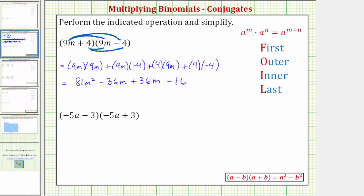Notice how we do have two like terms here. Negative 36m plus 36m is zero. So when multiplying conjugates, these two middle terms should always be opposites and have a sum of zero. And therefore the product is 81m squared minus 16.